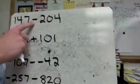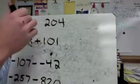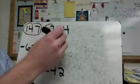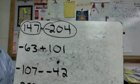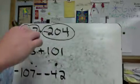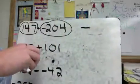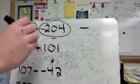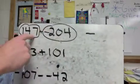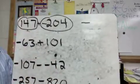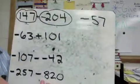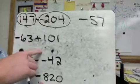First practice problem: 147 minus 204. Sneak that plus sign in, so we have 147 plus negative 204. That gives us 147 positives and 204 negatives — more negatives than positives, so the answer is negative. We cancel positives with negatives and figure out how many more negatives there are: 204 minus 147 is 57. So the answer is negative 57.